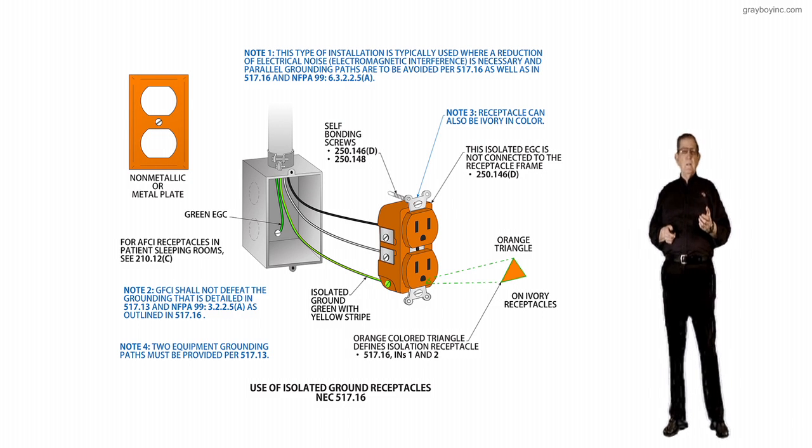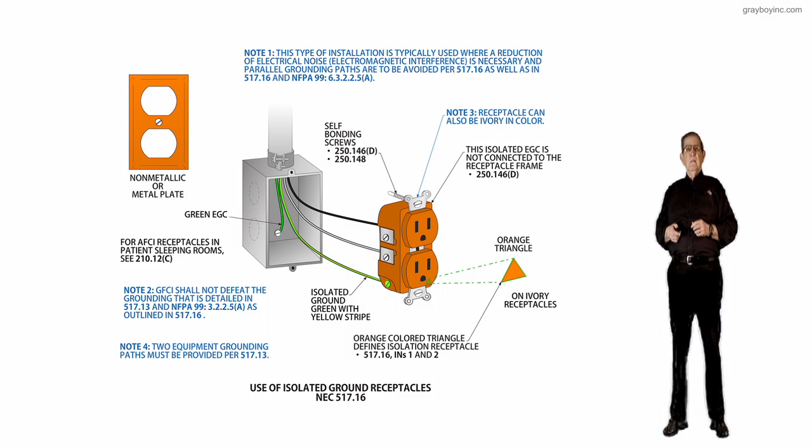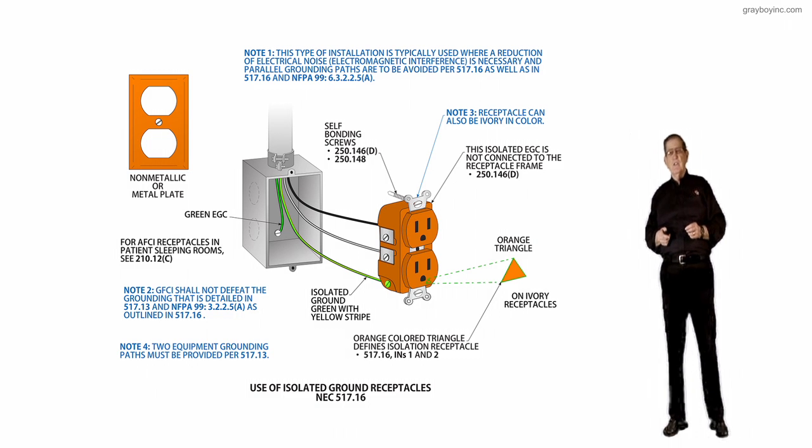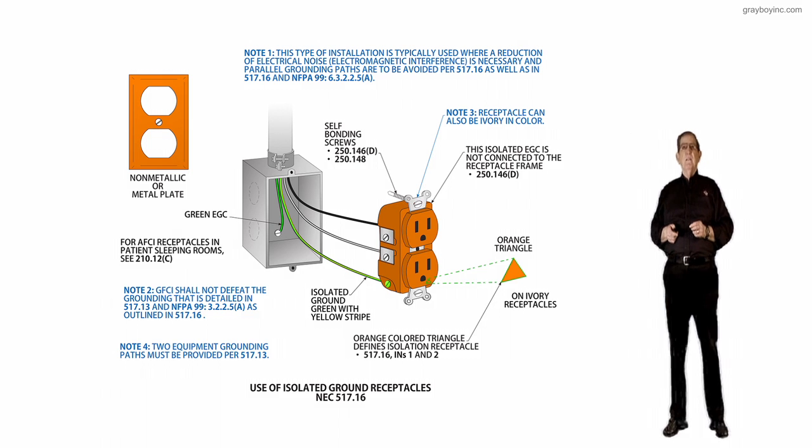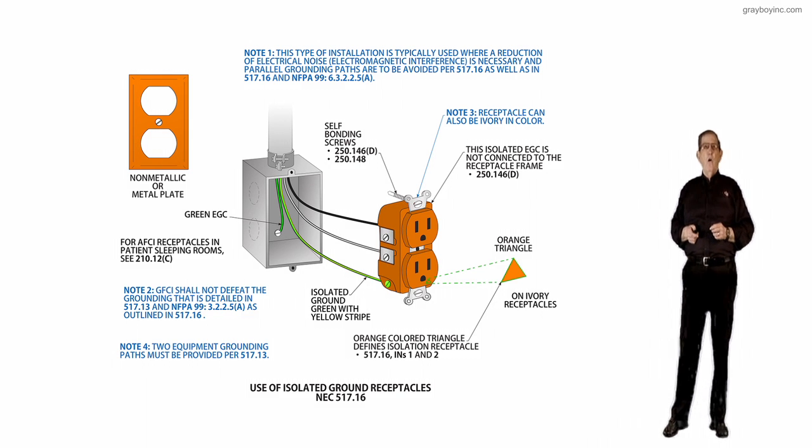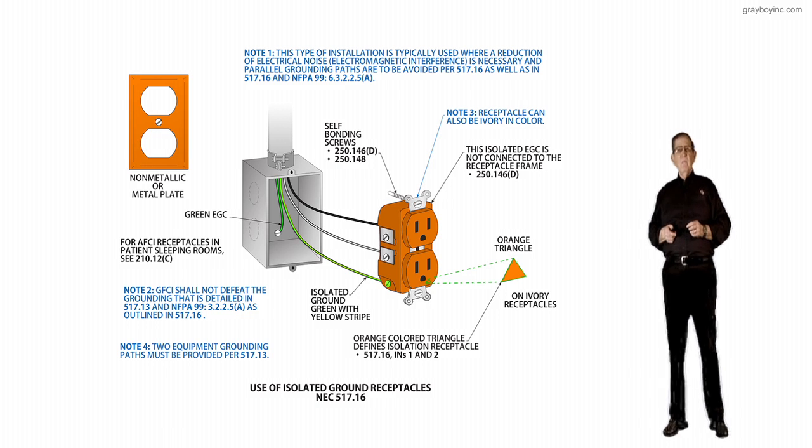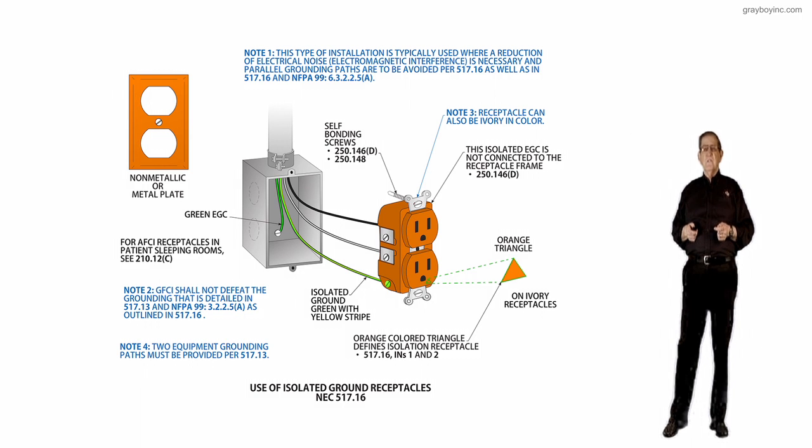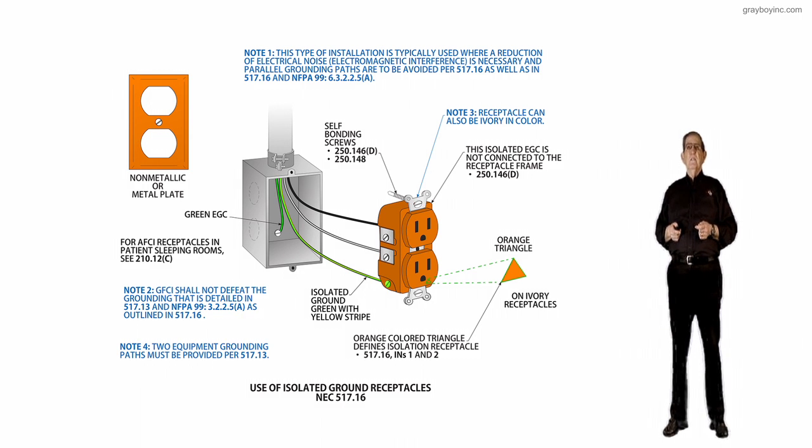Note 3 identifies that the receptacle might be ivory with an orange triangle on it instead of it being completely orange. The final note 4 talks about two equipment grounding paths must be provided by 517.13, which this type of installation using an isolation receptacle will not provide. And then notice sometimes you might even have an orange non-metallic or metal plate according to whatever the administration of the healthcare facility may demand. Instead of it being ivory with your orange triangle, it might be an orange plate. Review this section very carefully and watch out about it.